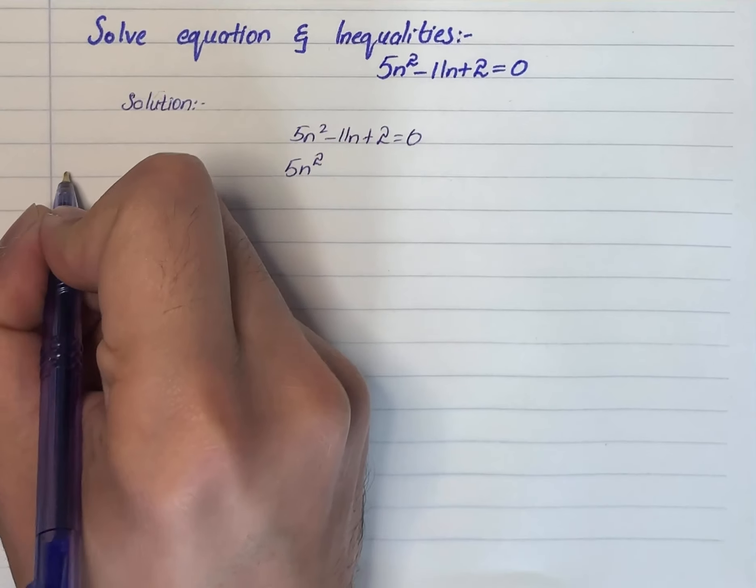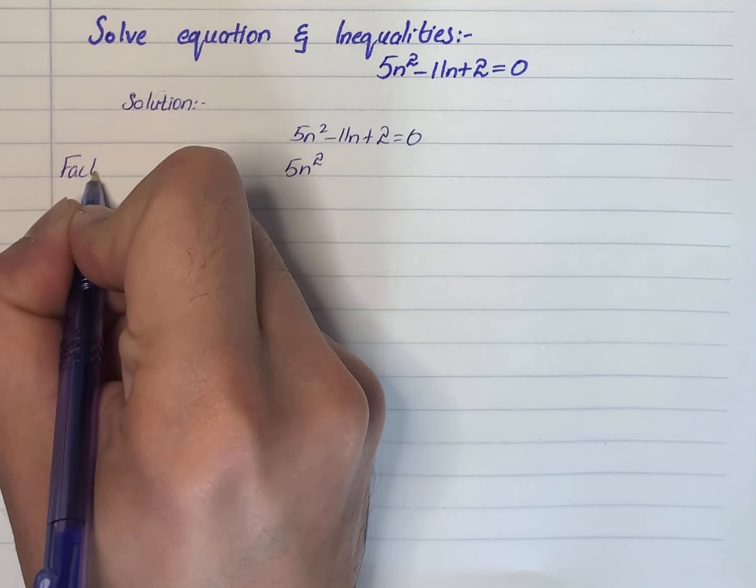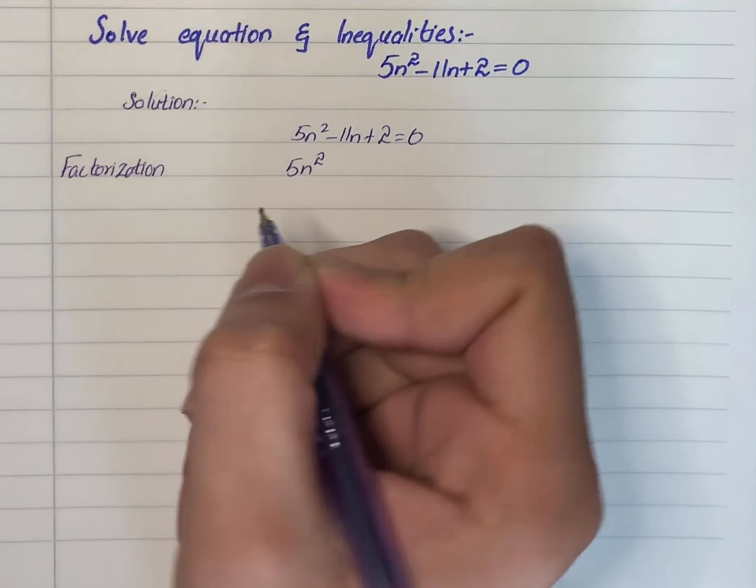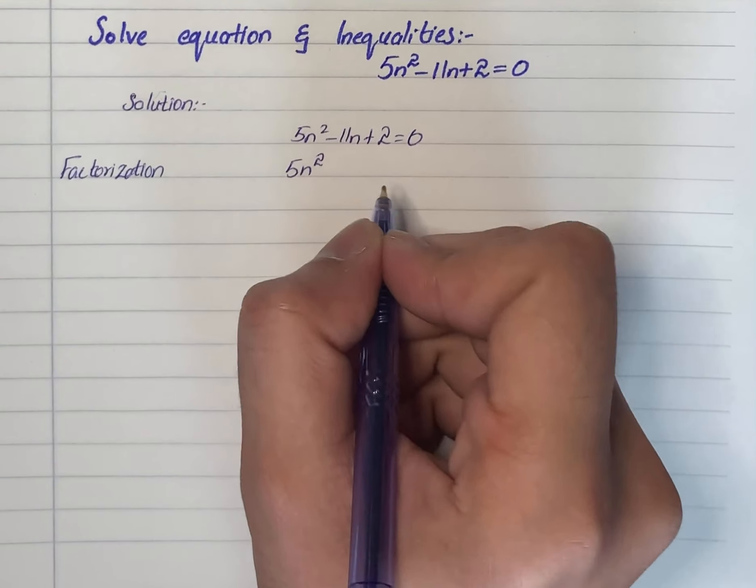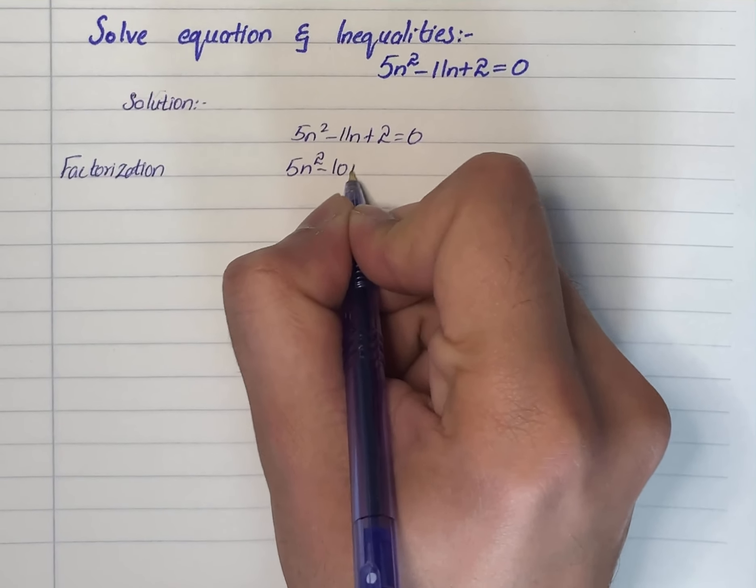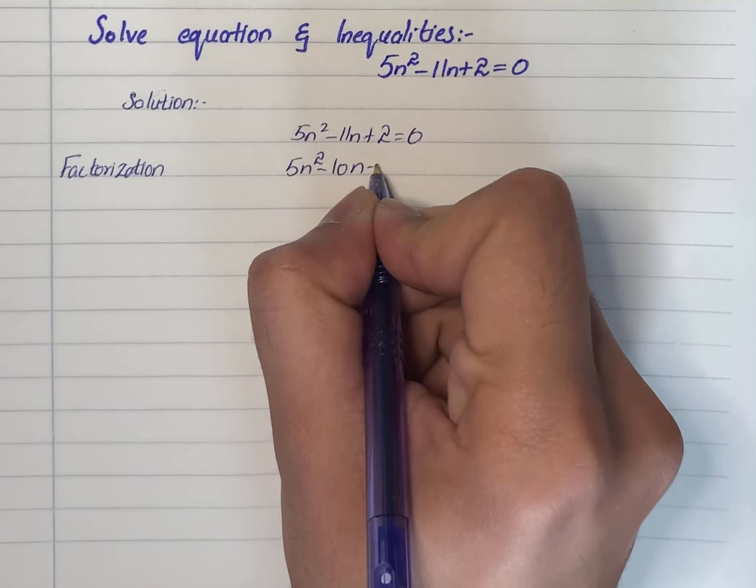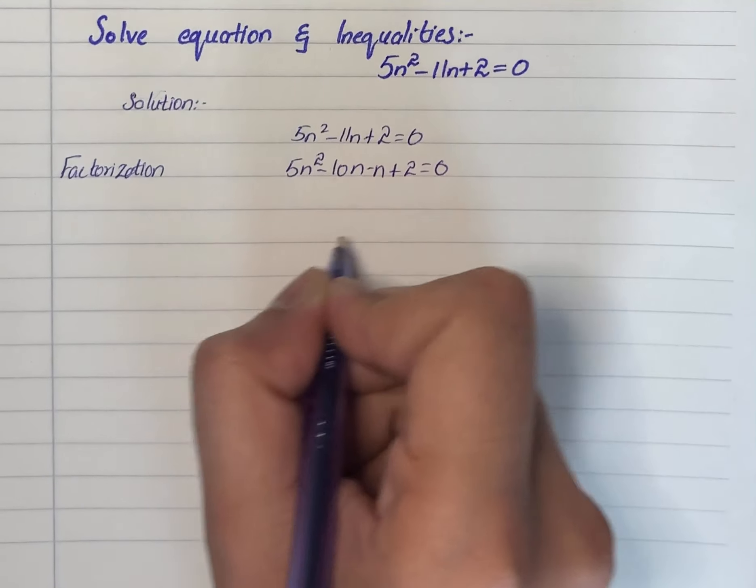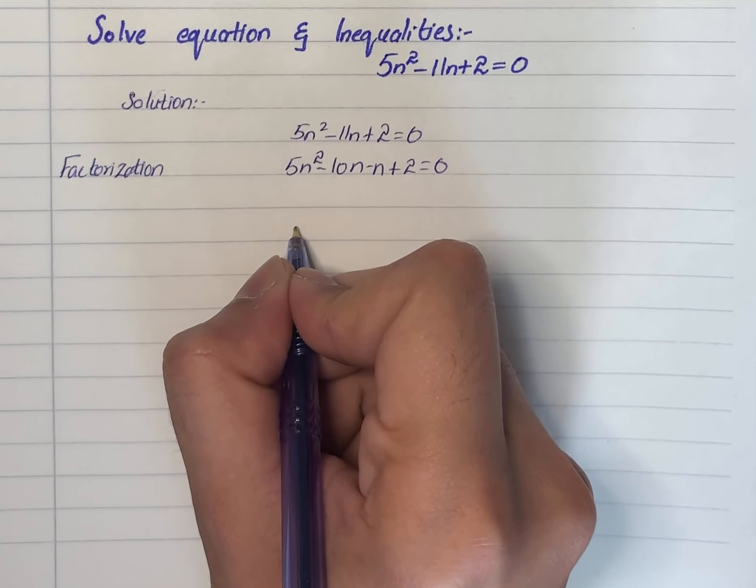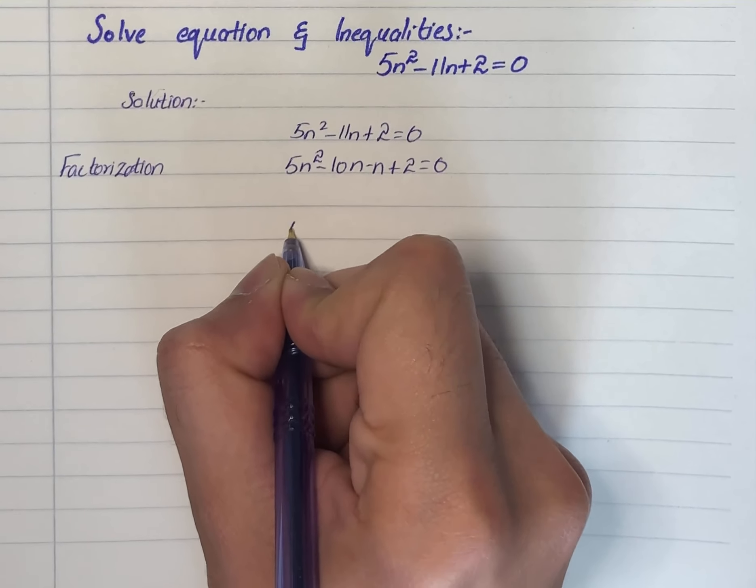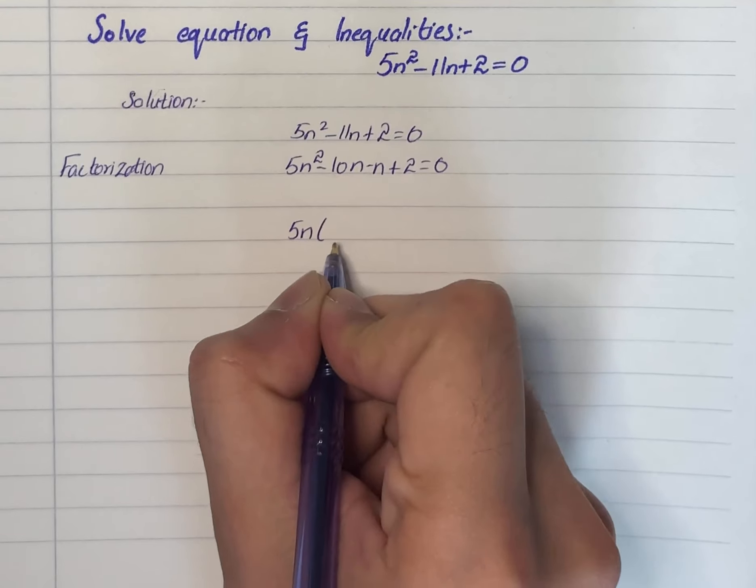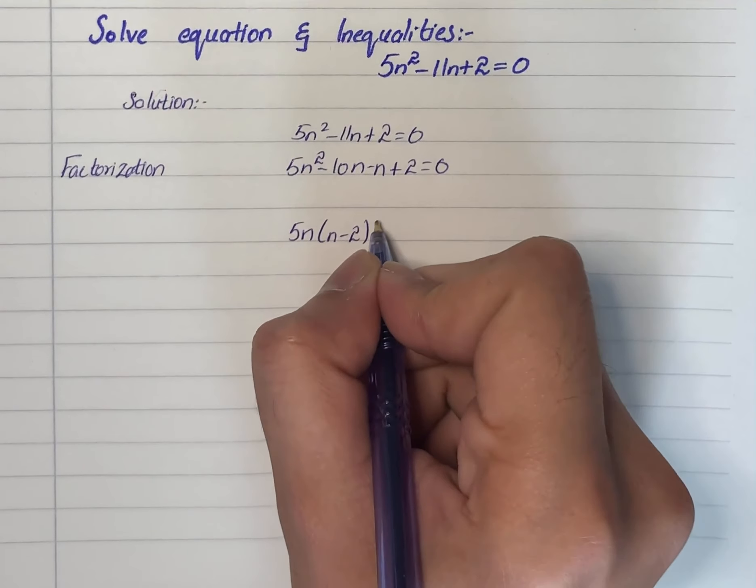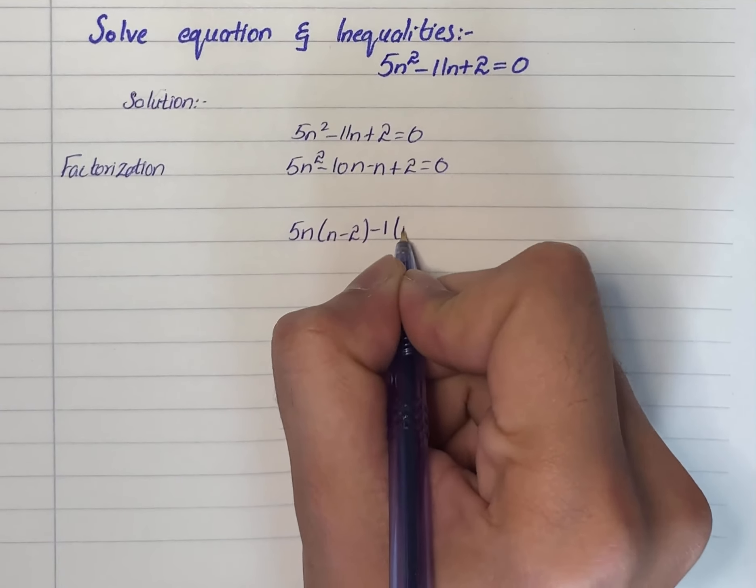Right, 5n² - 10n - n + 2 = 0. From these terms, we will take 5n common and -2. Here we will take -1 common, and it will become n - 2 = 0.